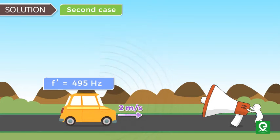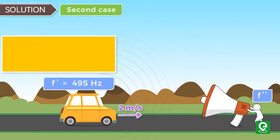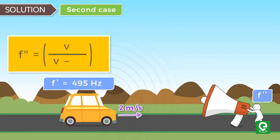So if the frequency detected by detector is f'', again using Doppler effect, we can calculate f'' = v/(v - v₀) × f'.